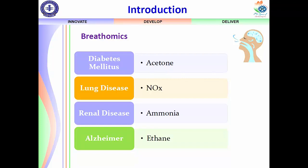Diabetes can be detected using acetone in the breath — this is one biomarker. NOx can be used for lung disease detection. Ammonia is for renal disease detection, and it also has applications in healthcare. Ethane can be used for Alzheimer's detection. So these are different gases present in the breath that can be used for detecting various diseases.